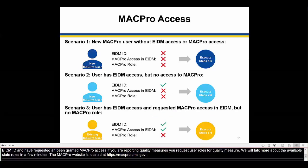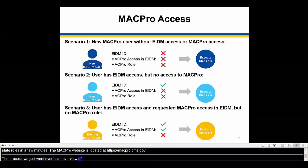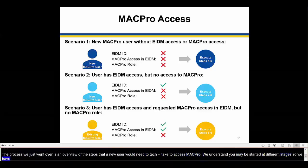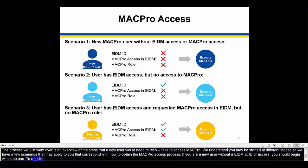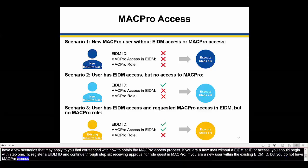The process we just went over is an overview of the steps that a new user would need to take to access MACPro. We understand that you may be starting at different stages, so we have a few scenarios. If you are a new user without an EIDM ID or MACPro access in EIDM, you should begin with Step 1 to register an EIDM ID and then continue through Step 6. If you are a new user with an existing EIDM ID but do not have MACPro access in EIDM, you should start with Step 2, requesting your access to MACPro through EIDM, and then continue through Step 6.